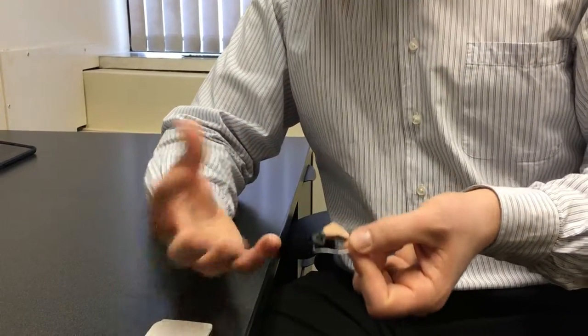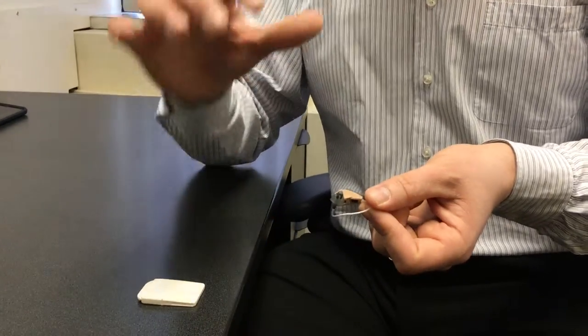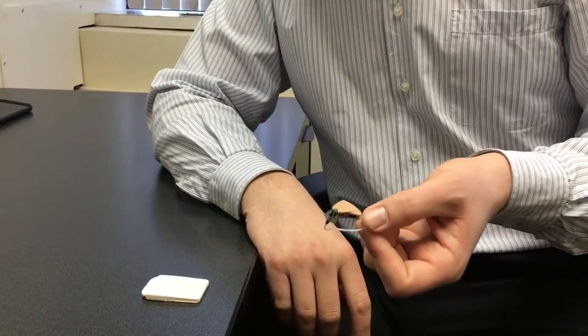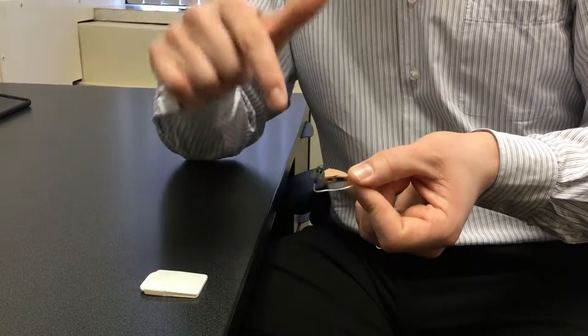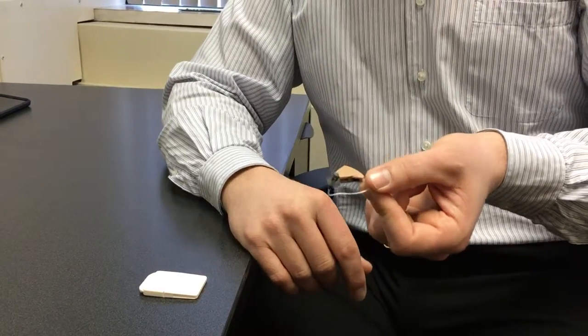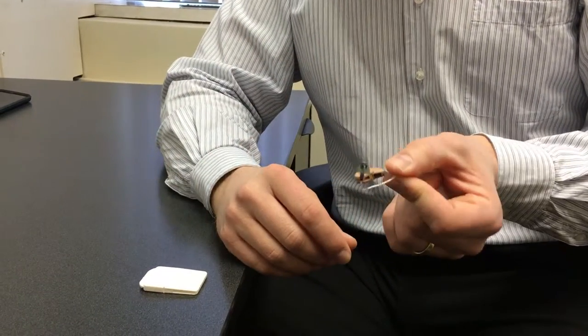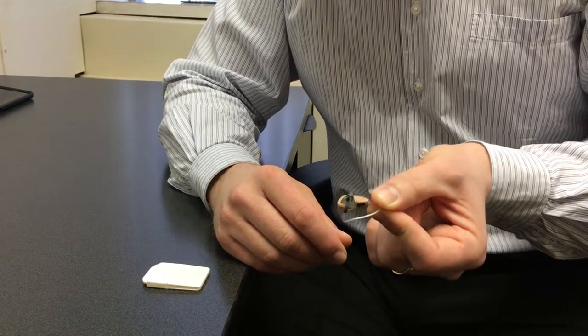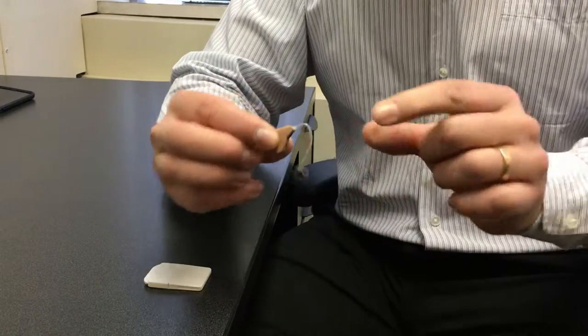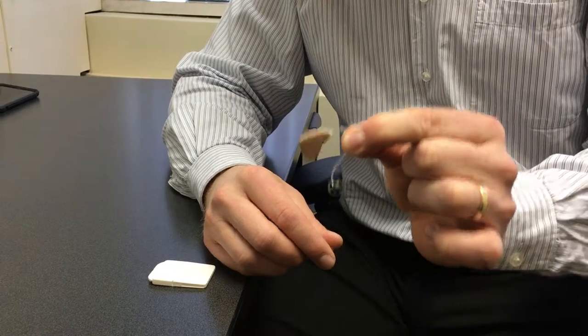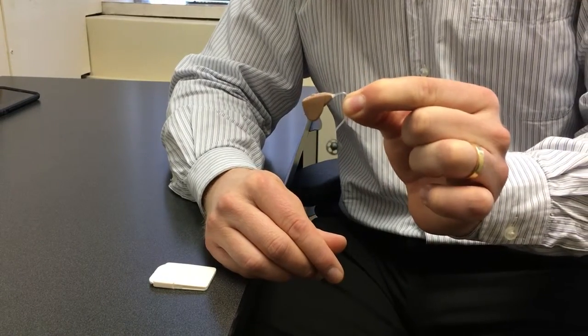So most hearing aids have some kind of wax filter in place and that just prevents the wax from getting into the working parts of the hearing aid. I'm just going to show you one type right now, this is a very common type of wax guard called a Serostop wax guard, and this is a receiver in the ear hearing aid which is also a very common popular choice.